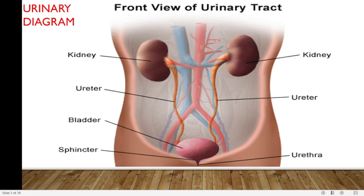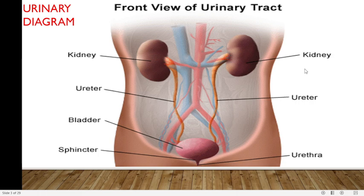When looking at the diagram of the urinary system, we can appreciate the two kidneys — left and right kidney. We can appreciate the ureter, the urinary bladder, the sphincter and lastly the urethra. These are the major parts of the urinary tract.